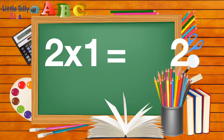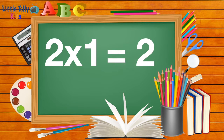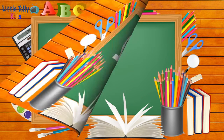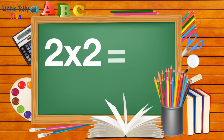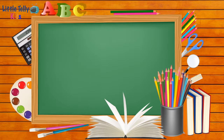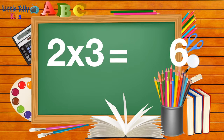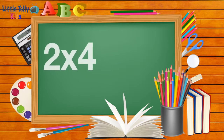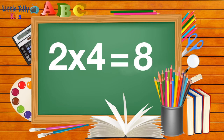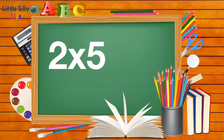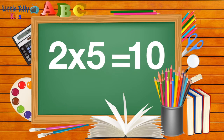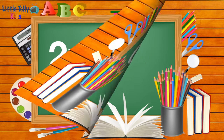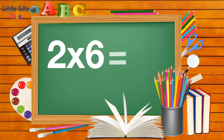Two ones are two. Two twos are four. Two threes are six. Two fours are eight. Two fives are ten. Two sixes are twelve.